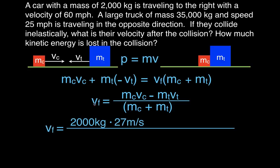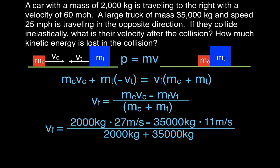The final velocity equals the mass of the car times its velocity. The car travels at 60 miles per hour, which converts to approximately 27 meters per second. The truck travels at 25 miles per hour, which is approximately 11 meters per second. We multiply each mass by its velocity, subtract the truck's term from the car's term, and divide by the total mass of 37,000 kg. The final velocity comes out to −8.9 meters per second.